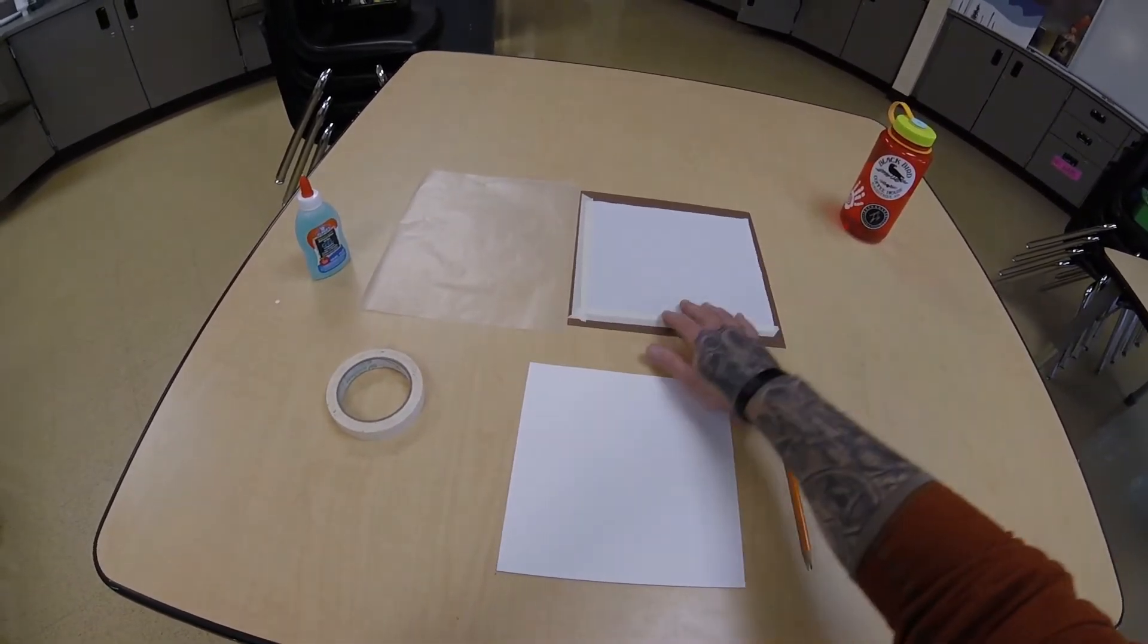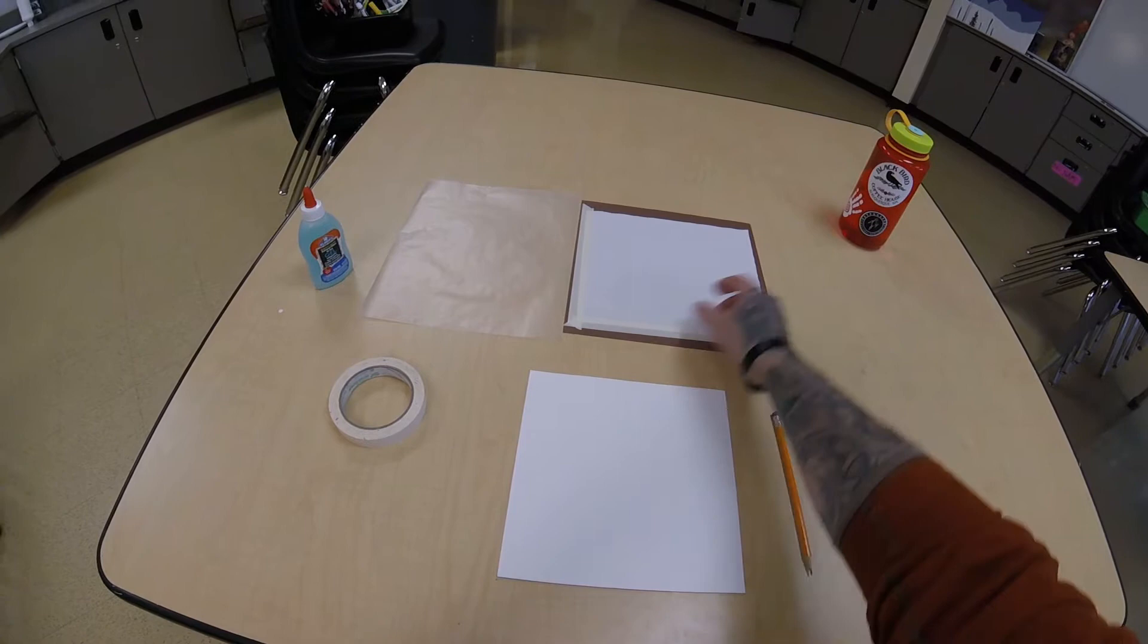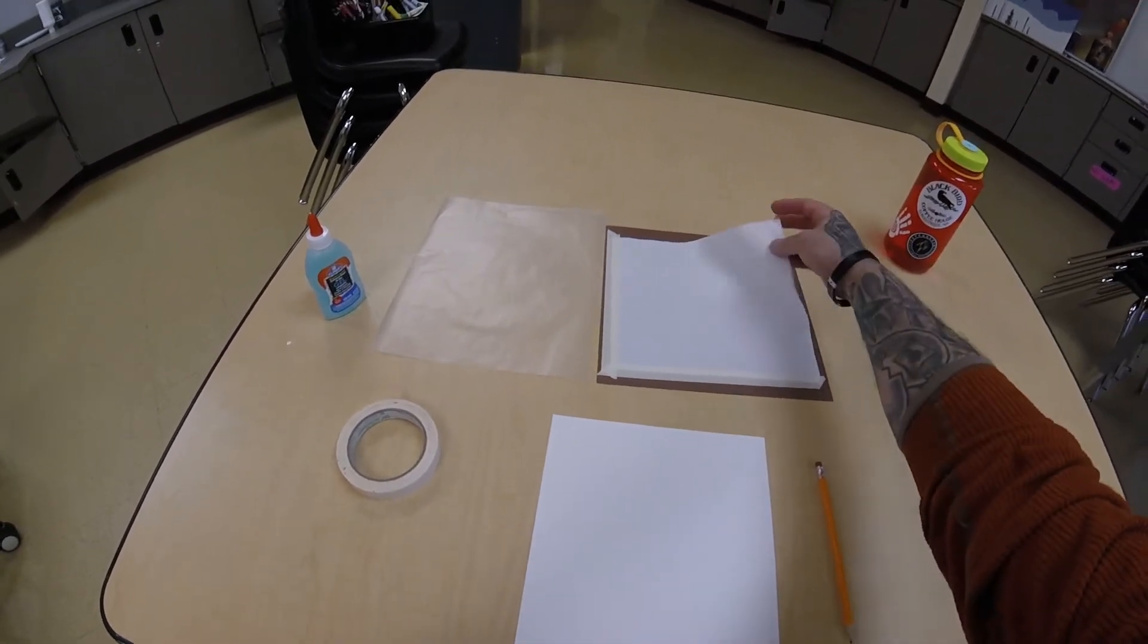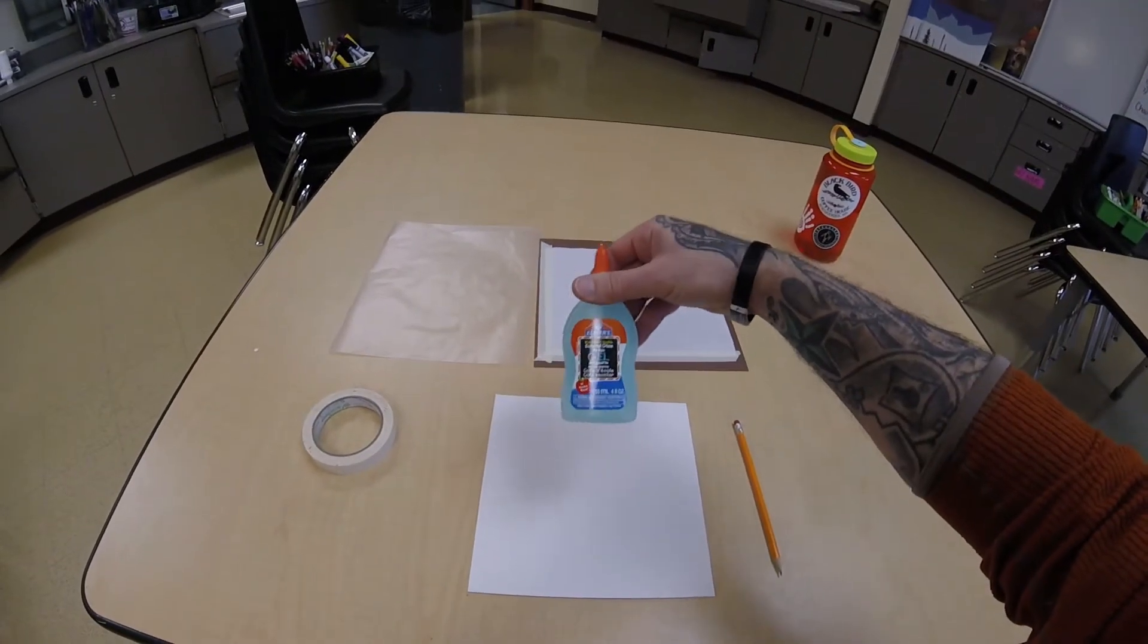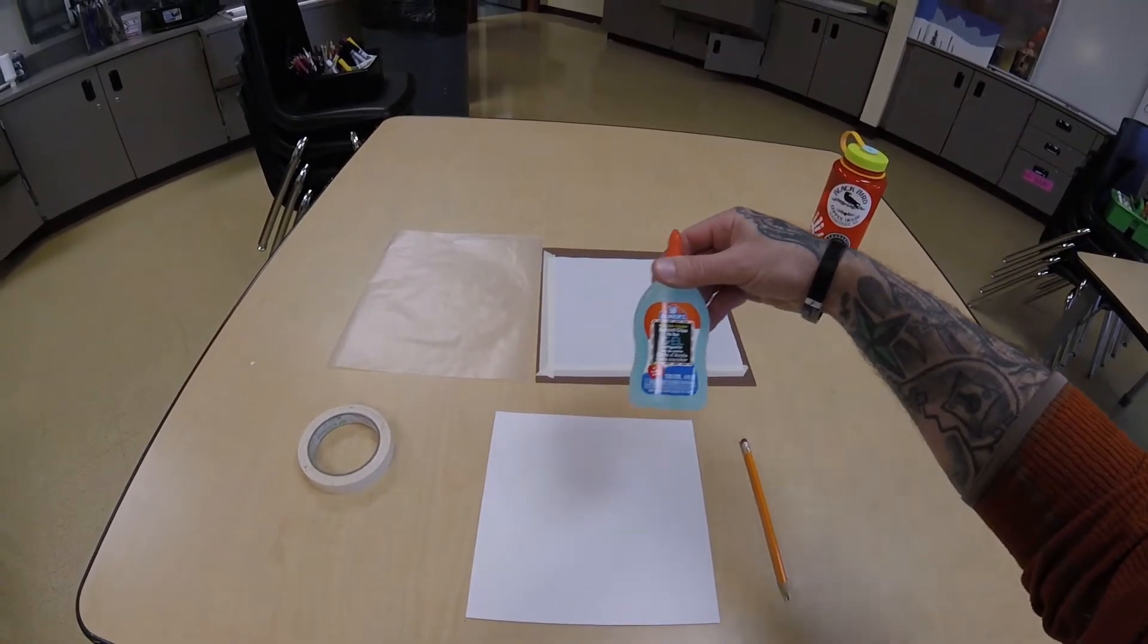some of this wax paper, and one of these boards that she's already prepared for you with some of this cotton on there, and some of the gel glue. We want to make sure that we're using this blue gel stuff today for this project. So let's get started.